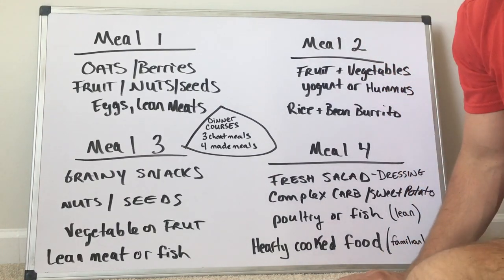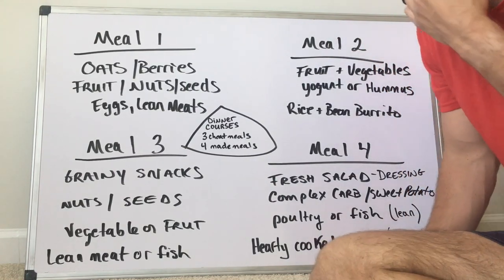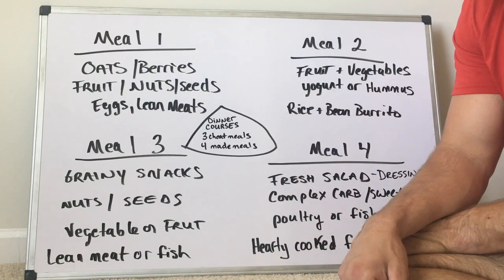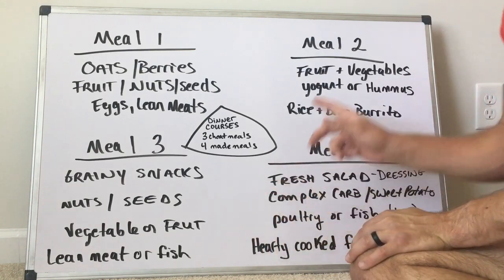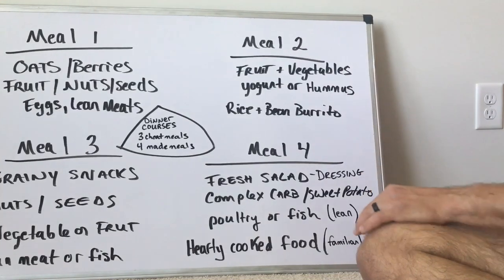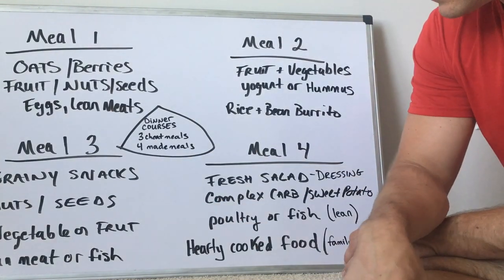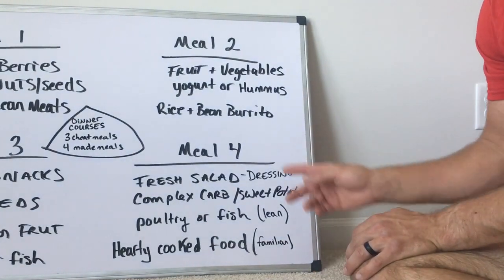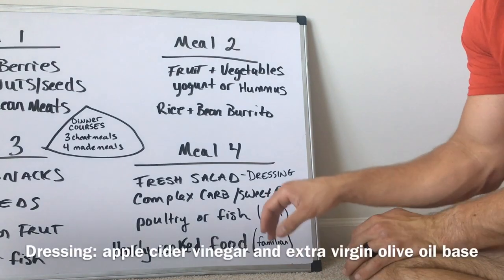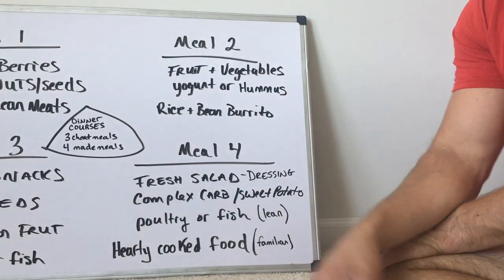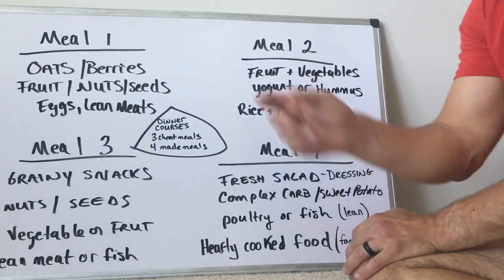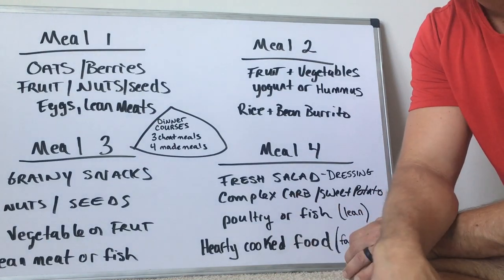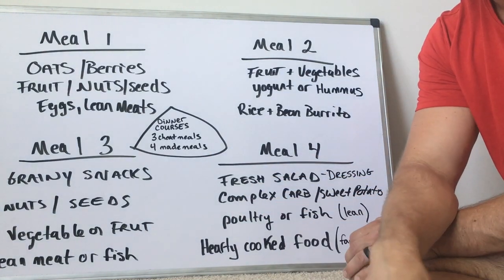So what might 4 meals look like with different rates of carbohydrates, fats, and proteins? Meal 1: oats, berries, fruit, nuts, seeds, eggs, and lean meats. Meal 2: fruit, vegetables, yogurt or hummus, rice and bean burrito. Meal 3: grainy snacks, nuts and seeds, vegetables or fruit, lean meat or fish. Meal 4: fresh salad with dressing, complex carbs like sweet potato, poultry or fish, and hearty cooked food. I also suggest 3 cheat meals per week — meaning 3 meals during the week you can eat whatever you want — and 4 planned dinner meals.